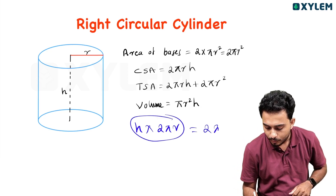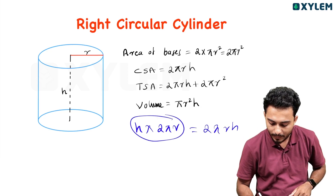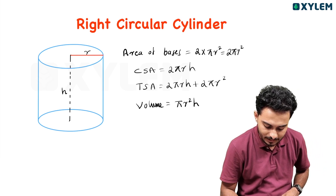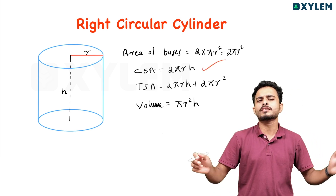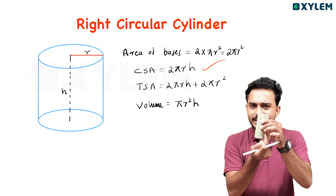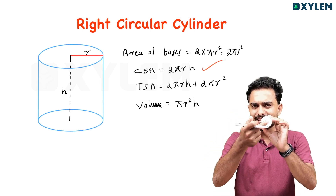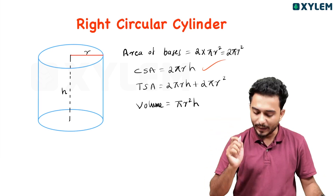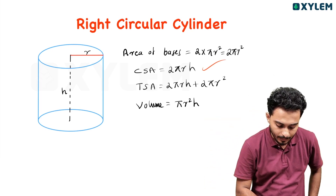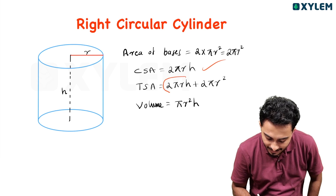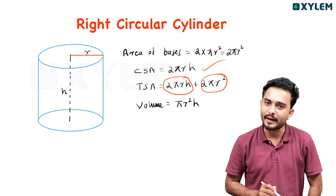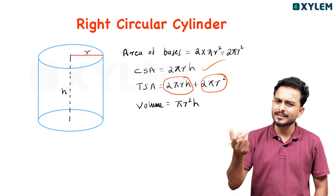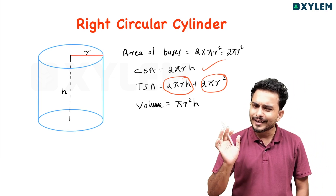The curved surface area is 2πR. For total surface area, the curved surface area plus the two circular ends: πR squared + πR squared = 2πR squared. So total surface area = 2πRH + 2πR squared. Clear.